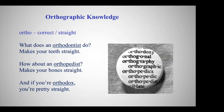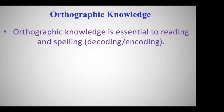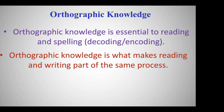Here's a little fun: what does 'ortho' mean? Ortho means correct or straight. What does an orthodontist do? Makes your teeth straight. An orthopedist? Makes your bones straight. And if you're orthodox, you're pretty straight. So ortho means straight and 'graphic' means writing — straight writing is the study of orthography. It's essential to understanding reading and spelling, and it's what makes reading and writing part of the same process.